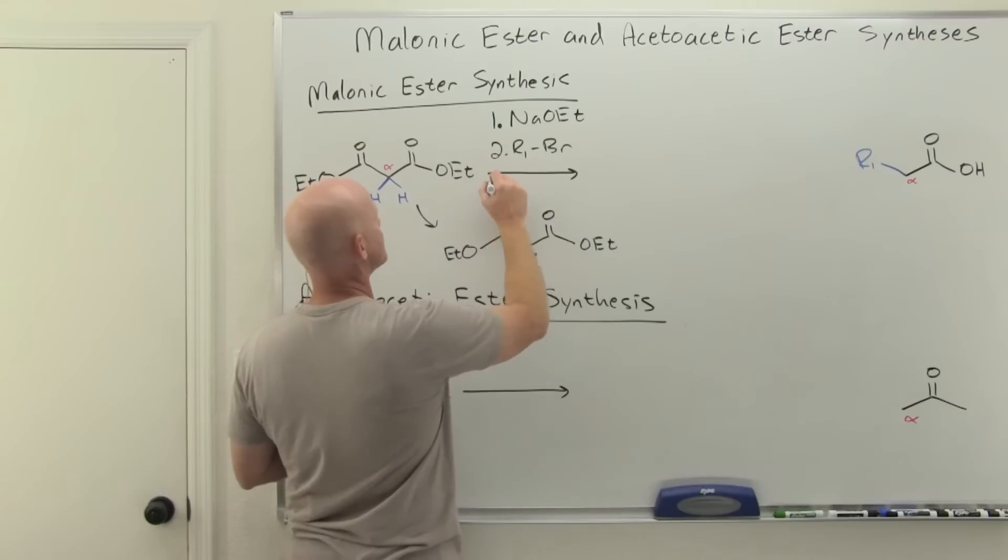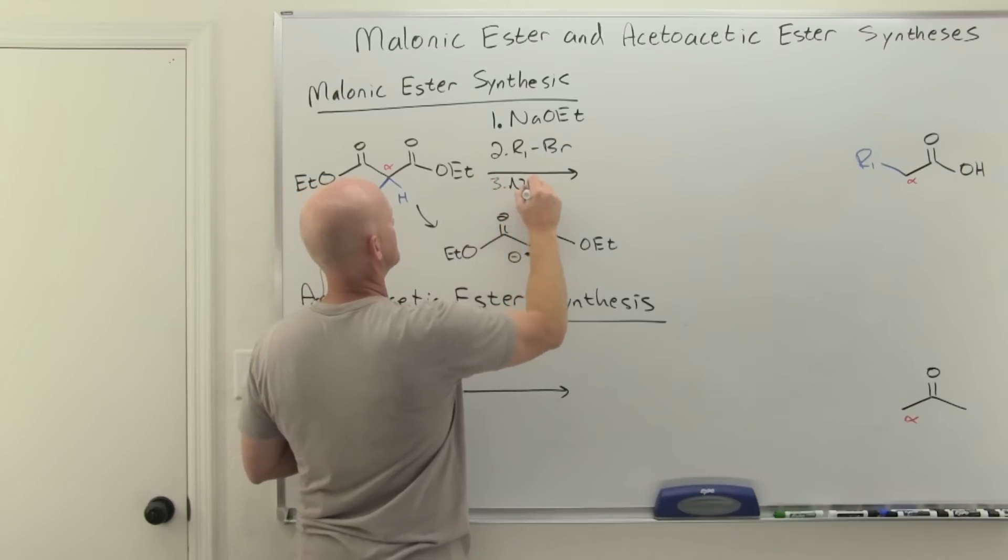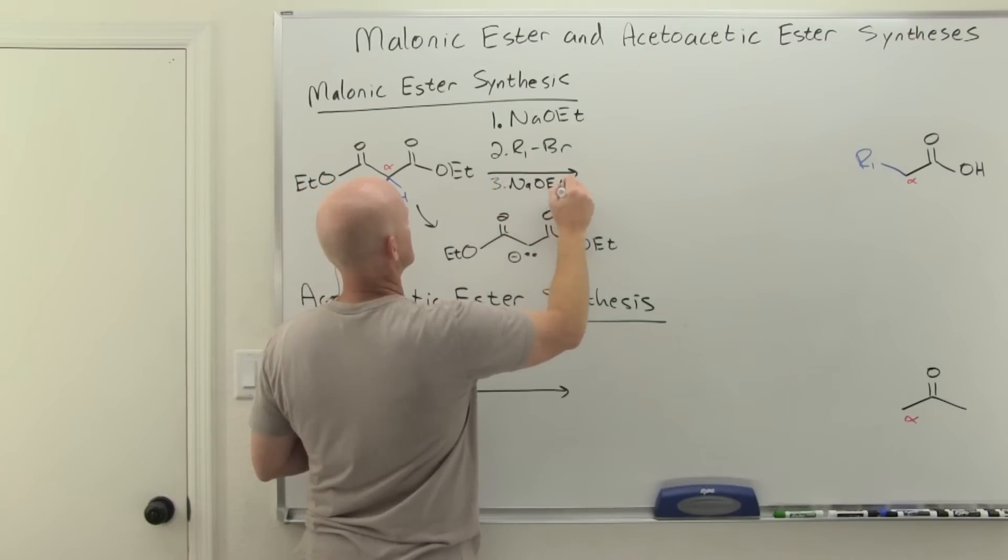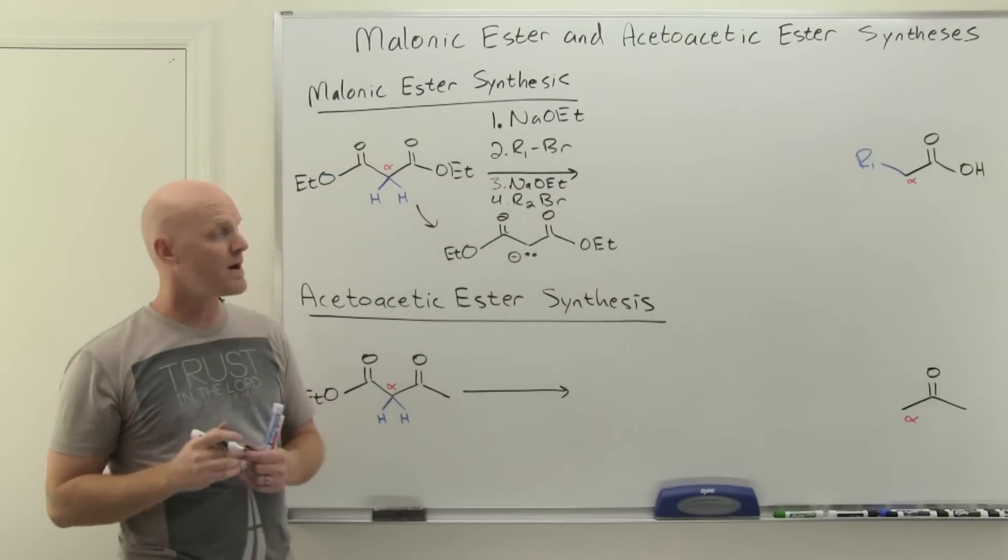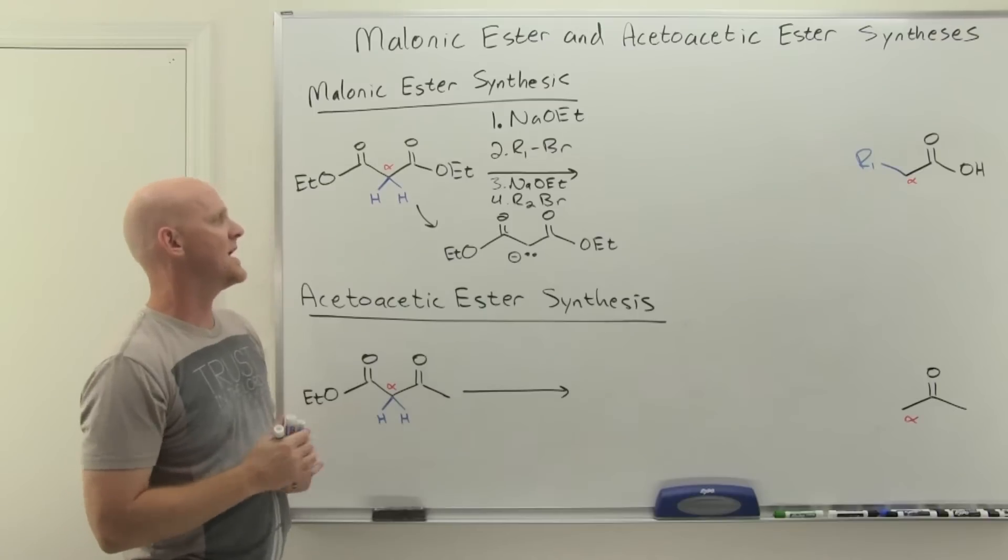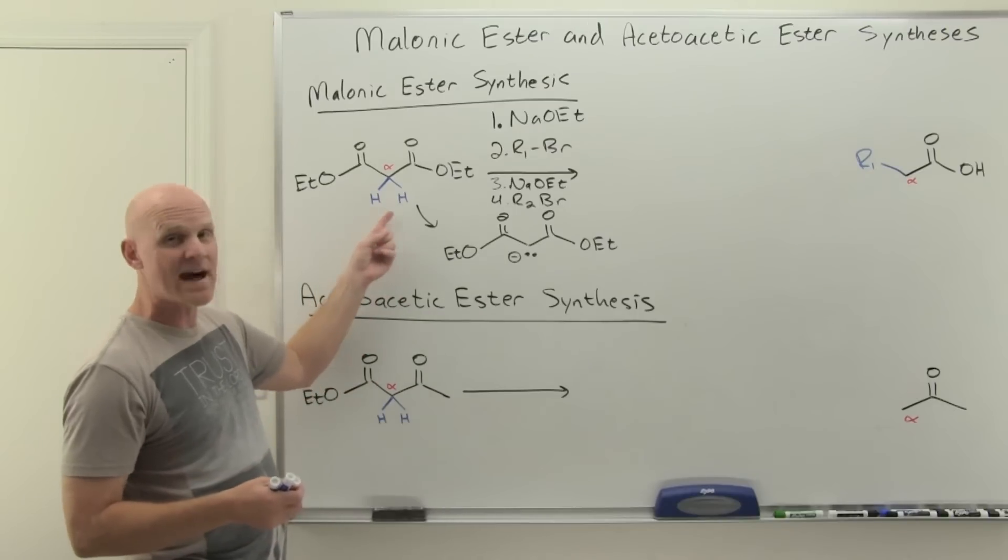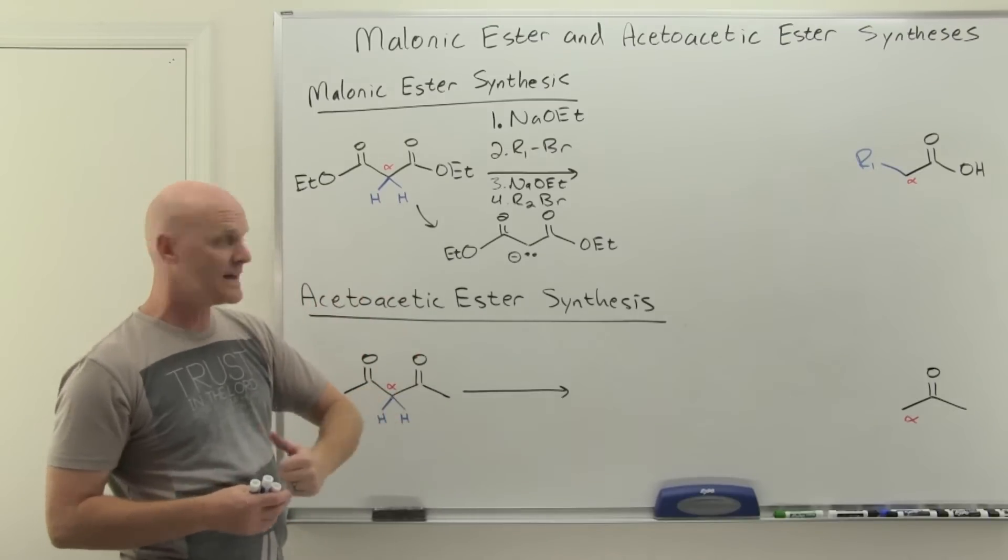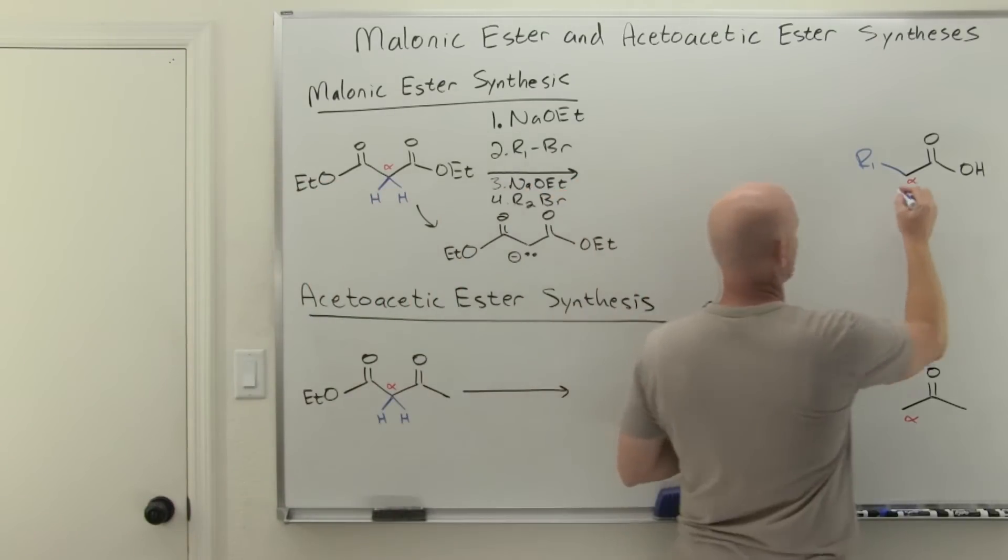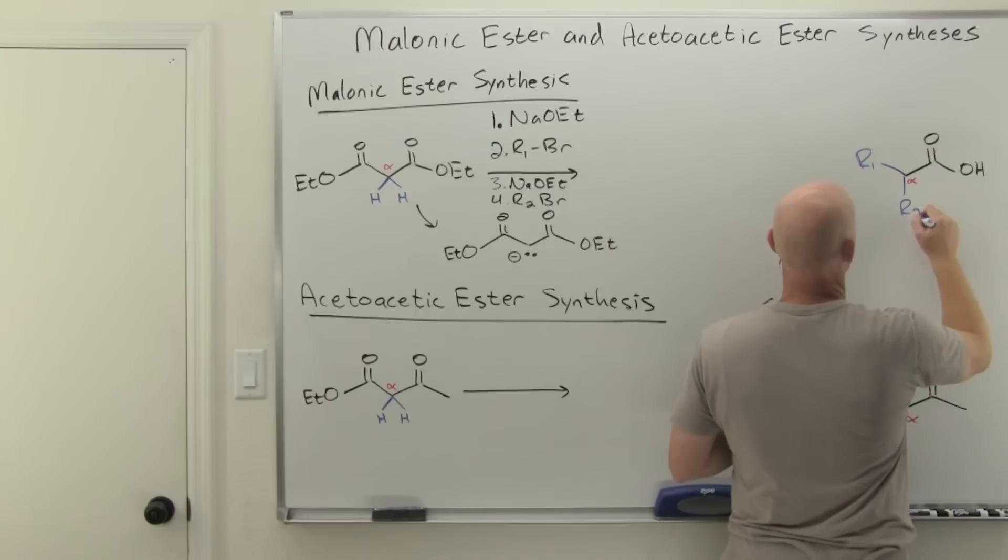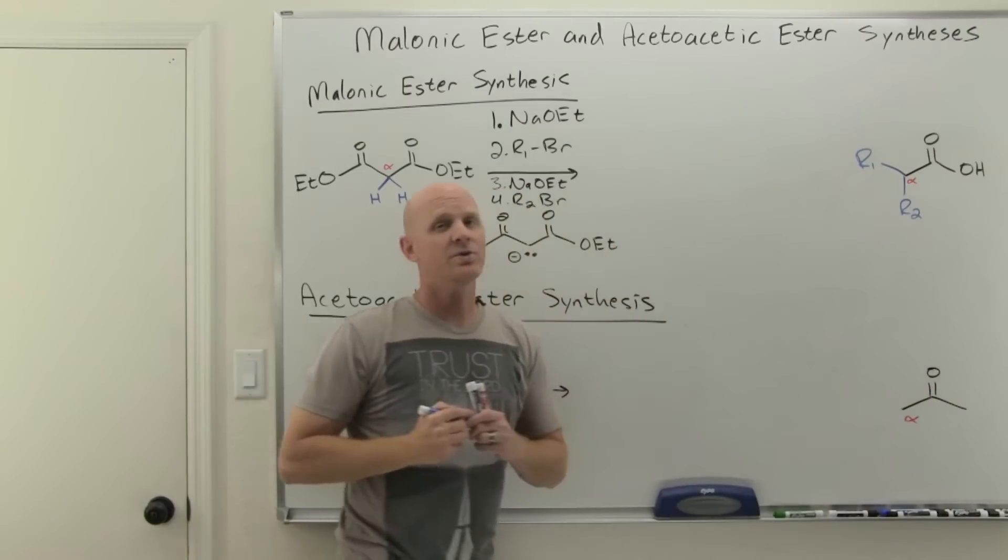But then you can do this all over again. You can add another equivalent of sodium ethoxide followed by a second alkyl halide. Again, methyl or primary is preferred. And you'll take off the second alpha hydrogen forming another enolate, which will then attack R2.